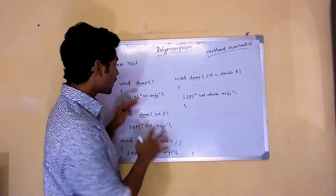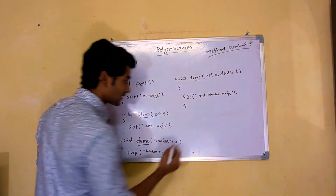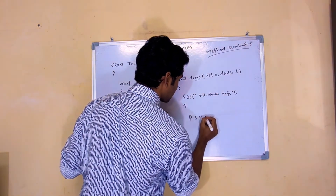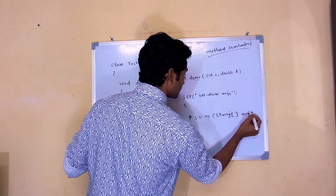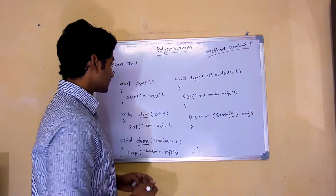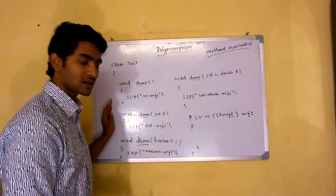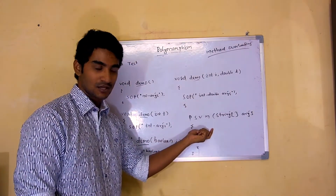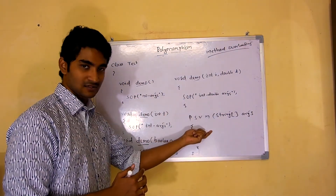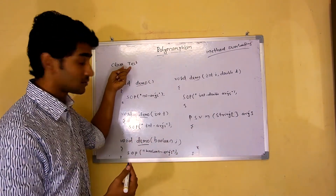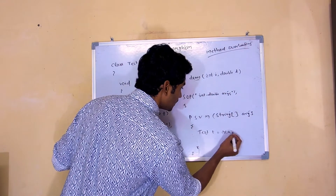Now we'll see how to call all these methods in our program. To call them, first we need a main method. I can say public static void main(String[] args). Now I want to call these methods from this main method. This main method is static, but these methods are non-static. To call non-static methods from a static context, we need to create an object of our class. My class is taste, so I create: taste t = new taste().